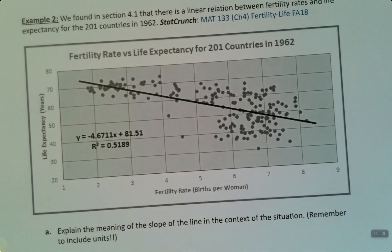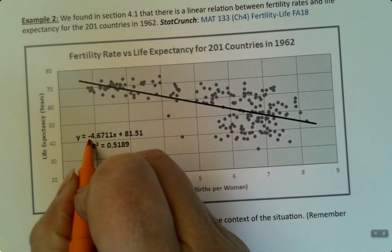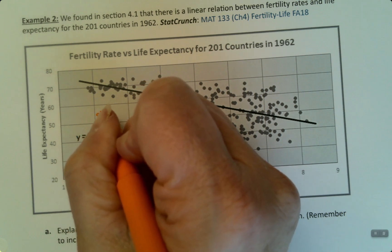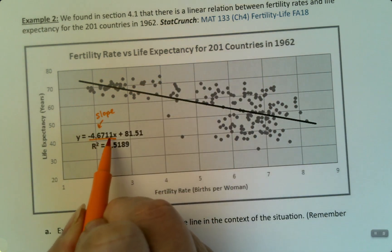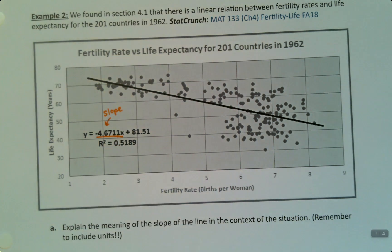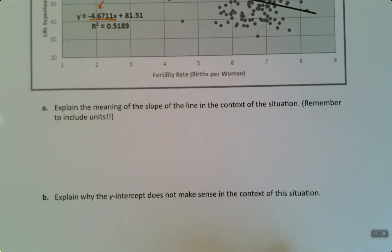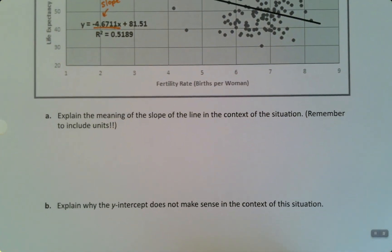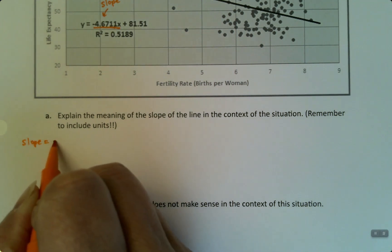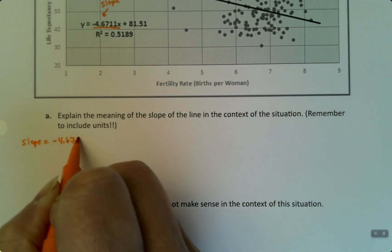So, as a matter of fact, let me highlight for you. The slope is whichever one is multiplied by the x. So that's the slope, the negative 4.6711. The y-intercept is actually that number, but we'll just leave that for a little bit later. So the slope is right there. So let me write this. So slope is negative 4.6711.